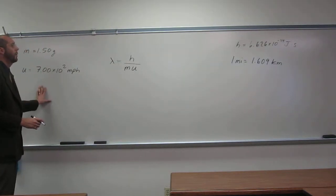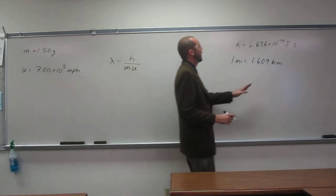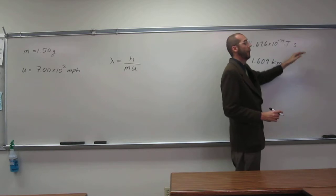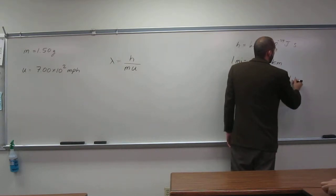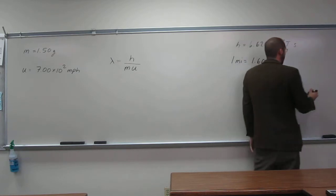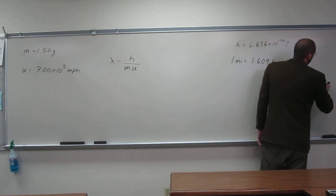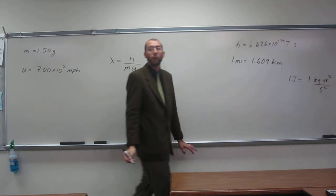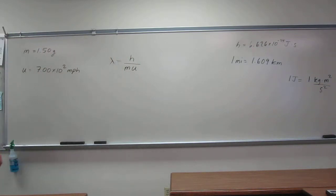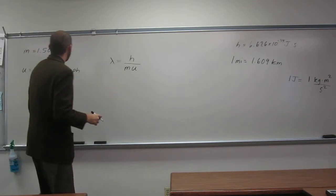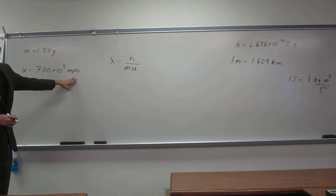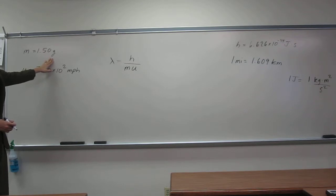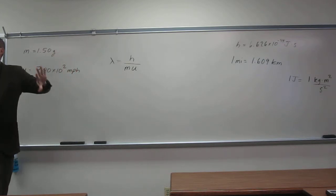Planck's constant is in units of joule seconds. And if you remember, one joule is one kilogram meter squared per second squared. You should all remember that. If you don't, you remember it now because you definitely need to know this. That means miles per hour is not what we want these units in. We want them in meters per second. And grams is not what we want. We want it in kilograms.